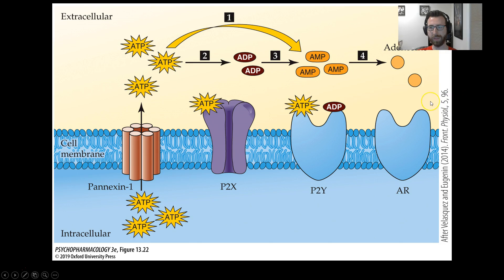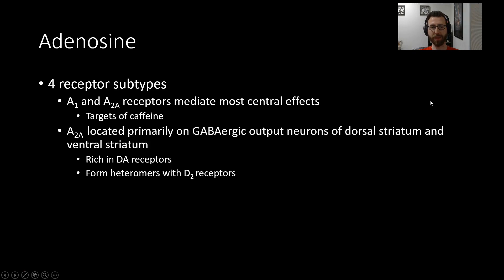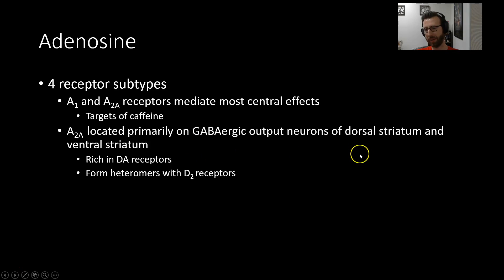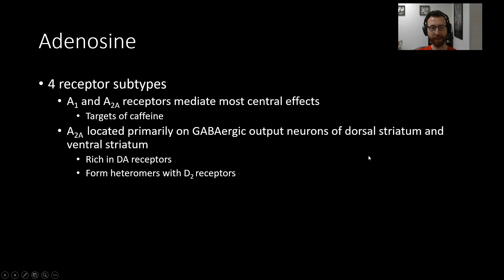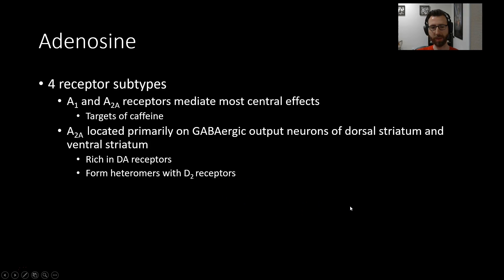We have adenosine receptors that are receptive to adenosine. There are four receptor subtypes, but we're focusing primarily on A1 and A2A receptor subtypes because these are the targets of caffeine mediating most of the central effects. Of particular interest is the A2A receptor, which is located primarily on GABAergic output neurons of the dorsal striatum and ventral striatum. These striatal neurons that are putting out GABA are also rich in dopamine receptors. These A2A receptors actually form what's called a heteromer with dopamine D2 receptors, and we're going to talk a bit more about what exactly that means.